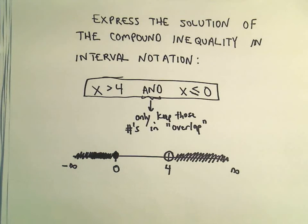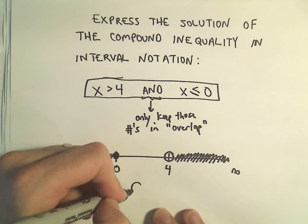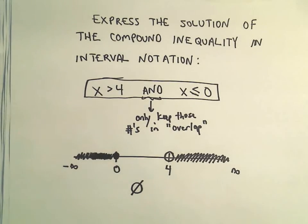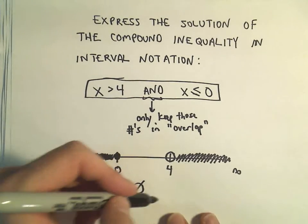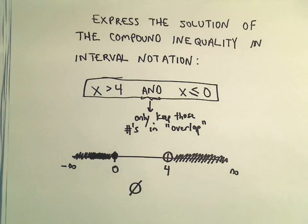The way we write the solution set when there's nothing that works, it almost looks like a zero, but it's not quite, it stands for the empty set. We just make a little O and we just put a little line through it. So basically this says, hey, when you see this symbol, it says there's nothing at all that satisfies the original inequalities.